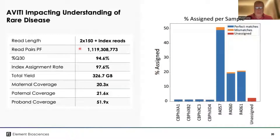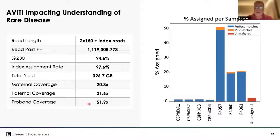Using a single flow cell with just over 1 billion reads, we had Q30 scores at 94.6%, very strong index assignment rate, and a total yield of 326 gigabases. We intentionally sequenced the parents at lower coverage to give higher coverage to the proband — 20x maternal, 21x paternal, and almost 52x coverage in the proband. Adding these up, this is over 90x total coverage.